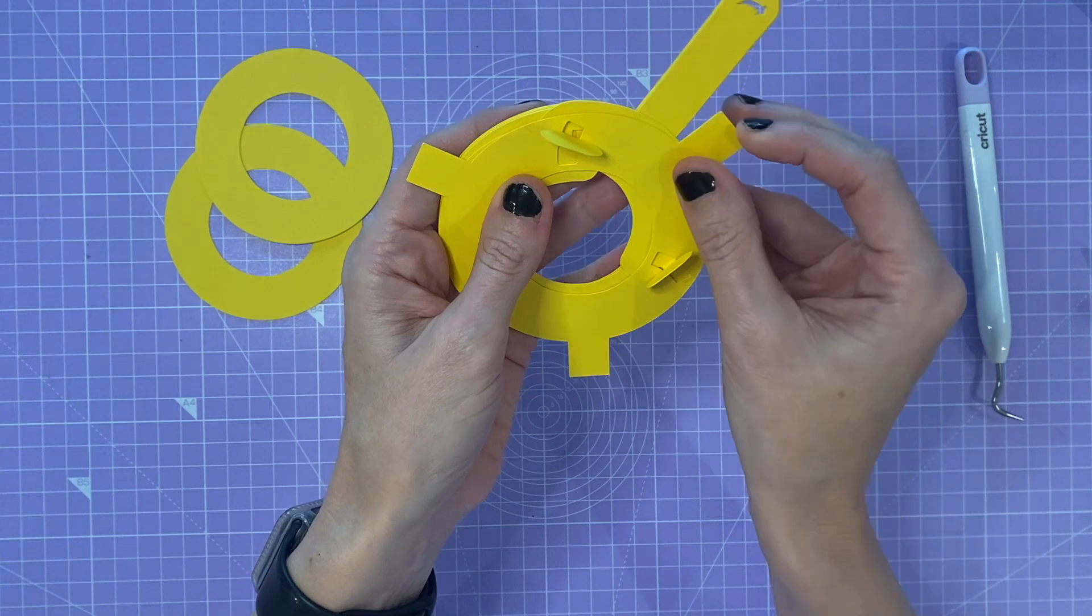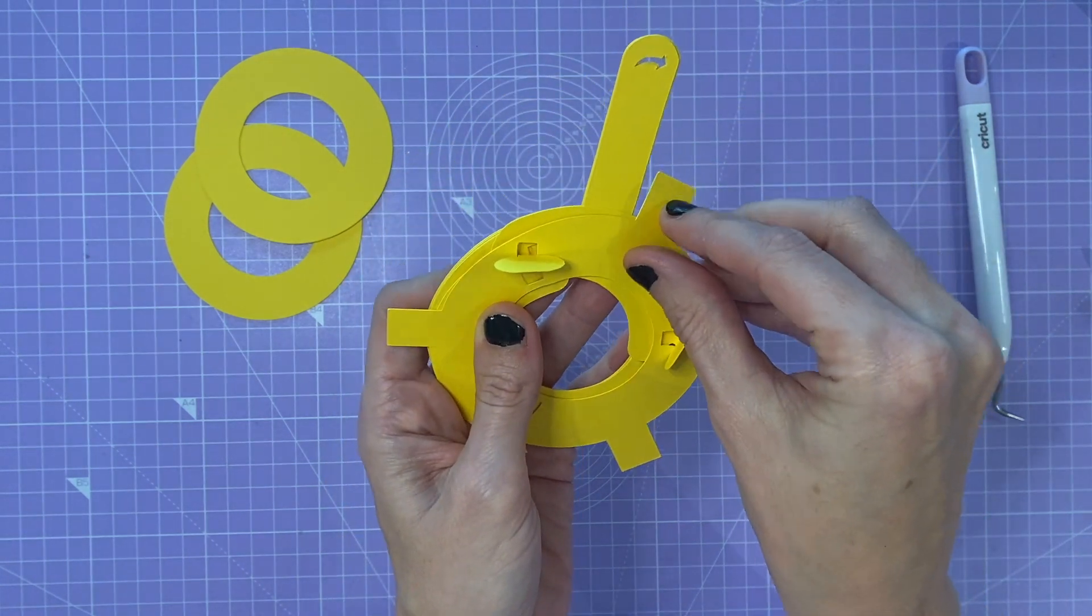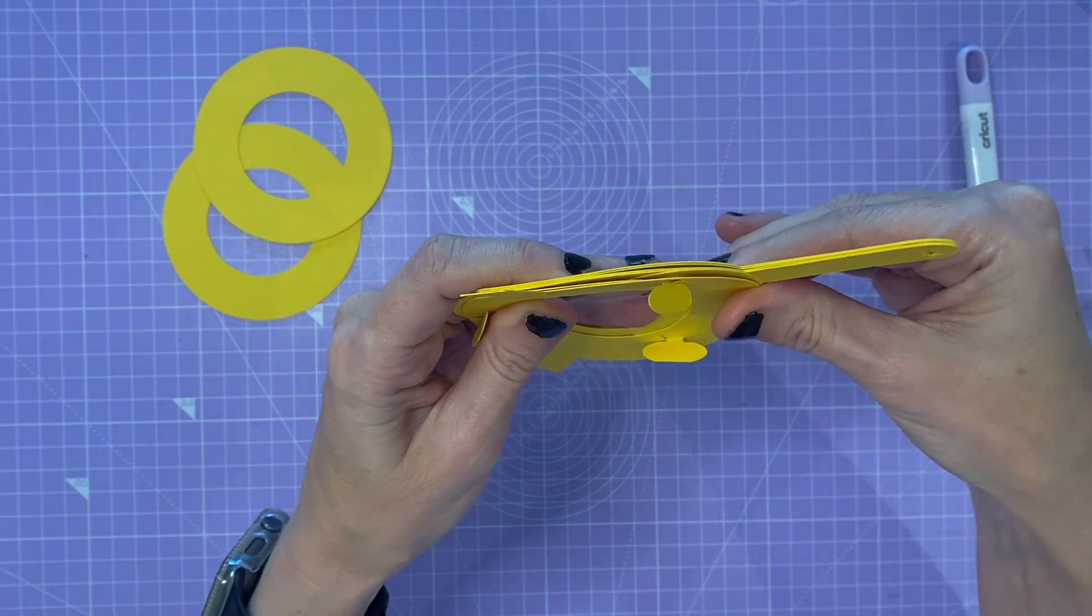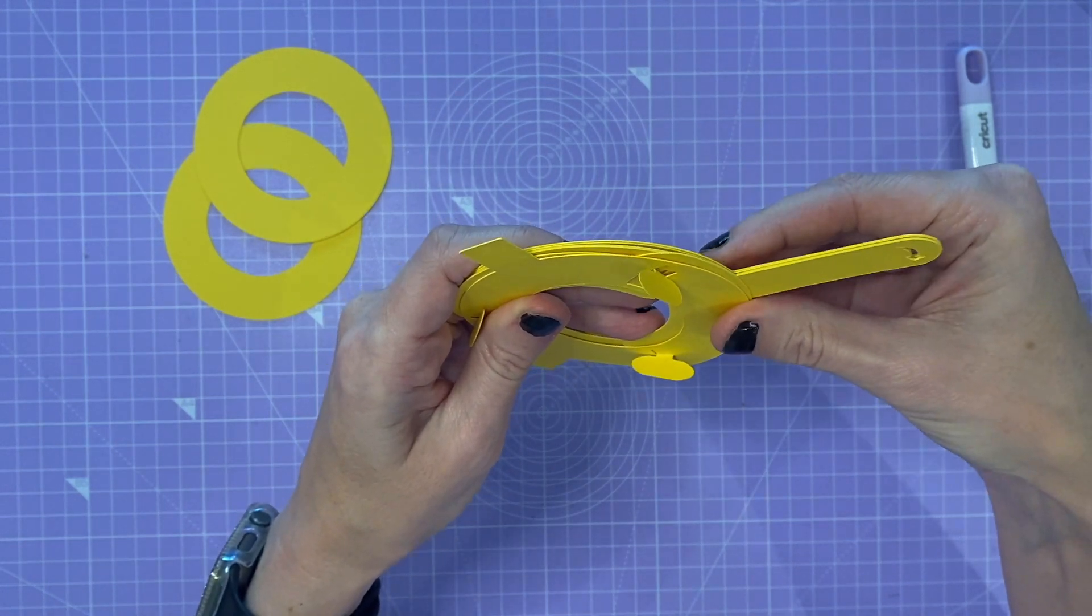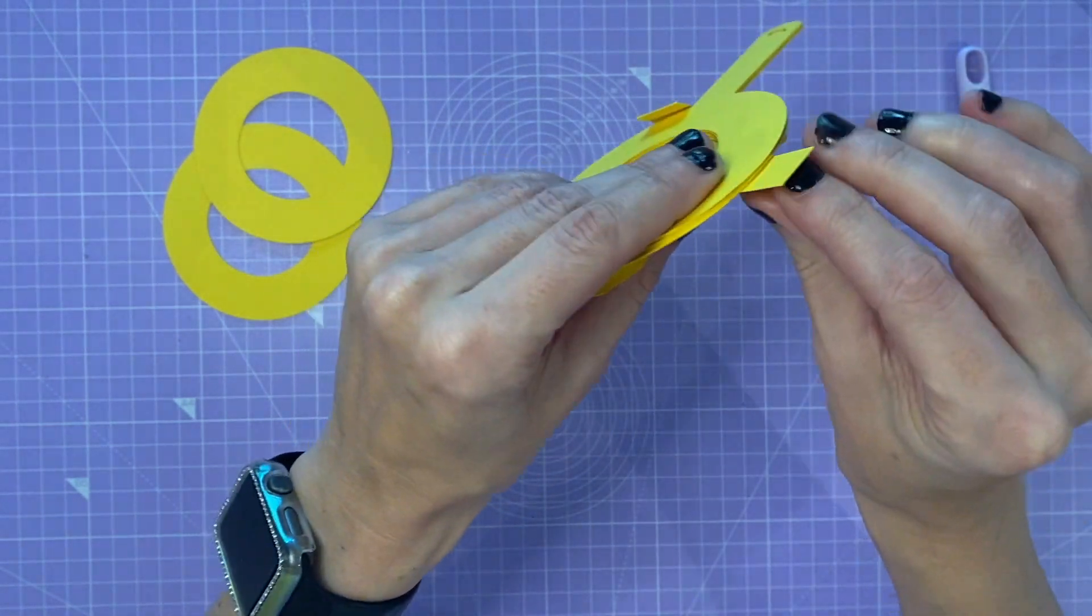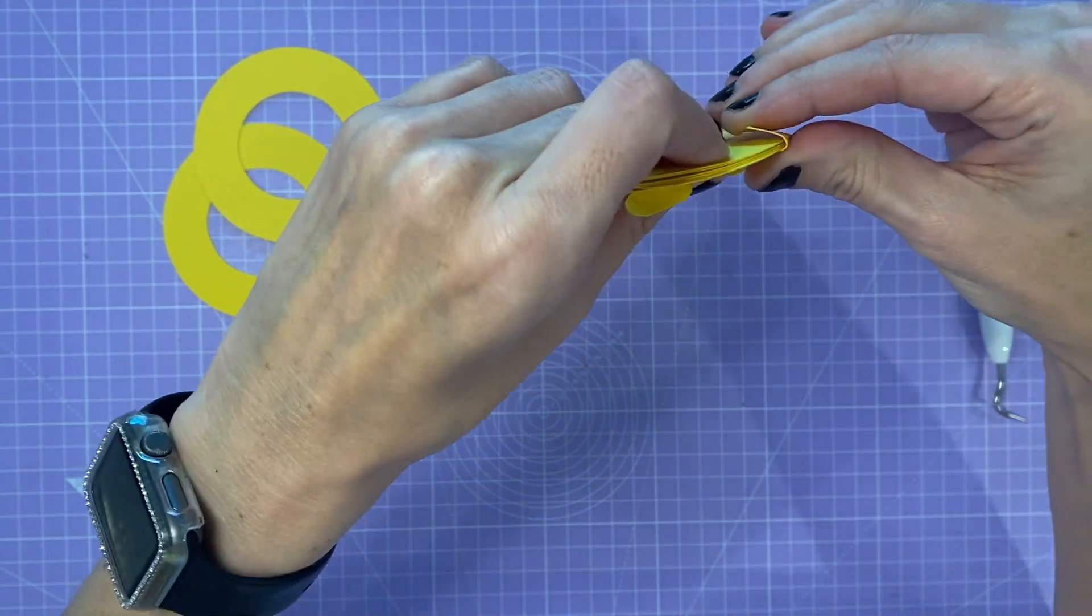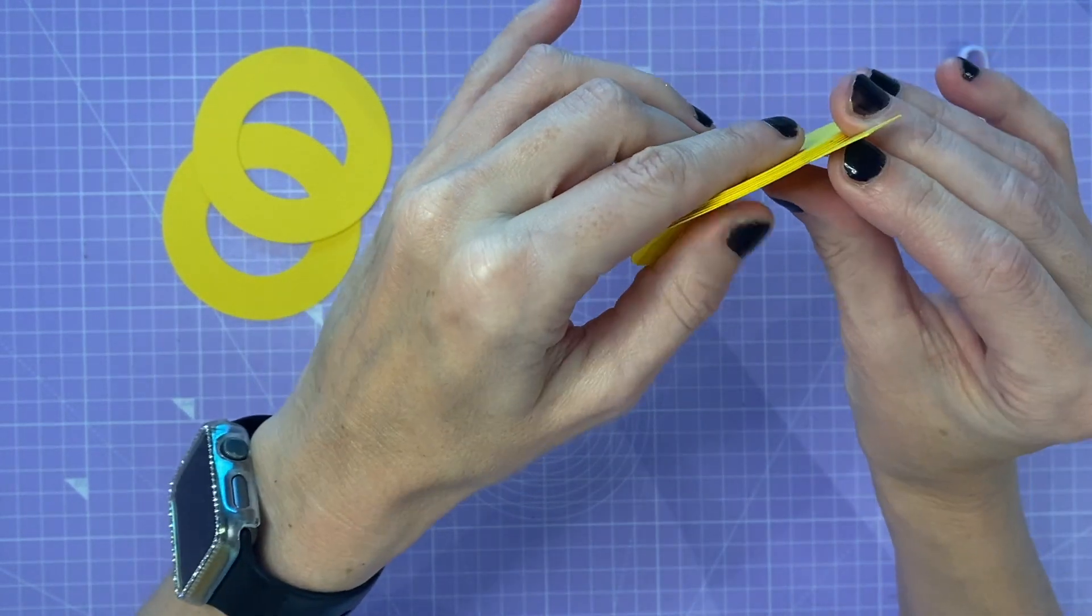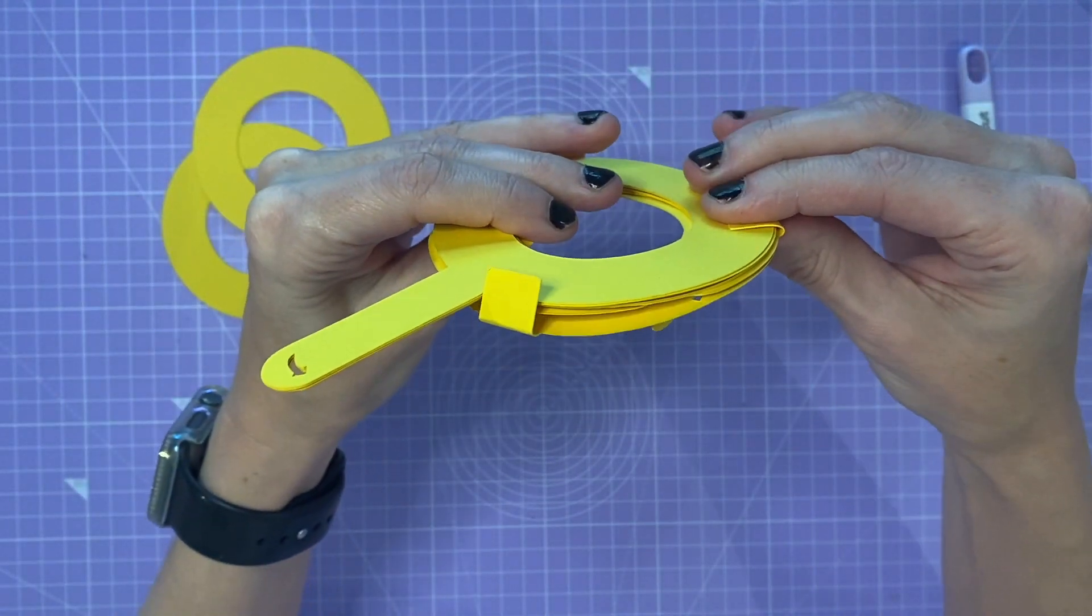And then the next step is to bend these arms in. You want it to be slightly loose, like you don't want it to be super tight to allow movement. So if you just kind of bend it like that and then push it back a little so there's room to maneuver, just like that.